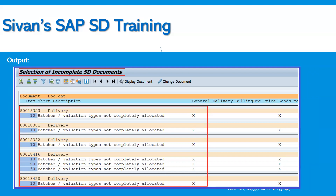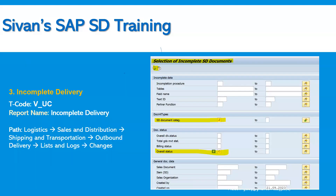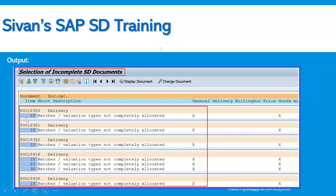For example, if anything is missed — such as the batch evaluation type not being completely allocated — and the batch is not maintained for an outbound delivery, we can open that delivery, change the document, maintain the batch number, and process it. Once we also complete the PGI, that outbound delivery will disappear from this report. When we re-execute V_UC, any outbound delivery that has been fully processed — for example, 80018353 where the batch was input and PGI was done — will no longer appear in the screen.